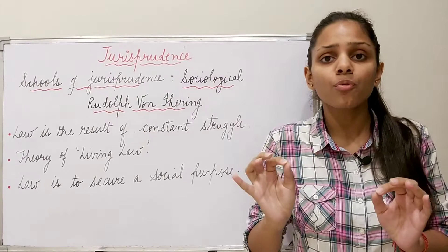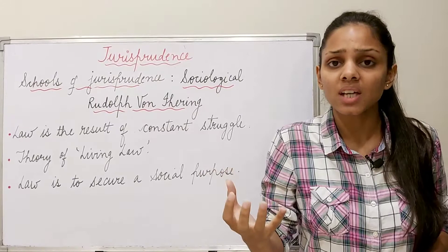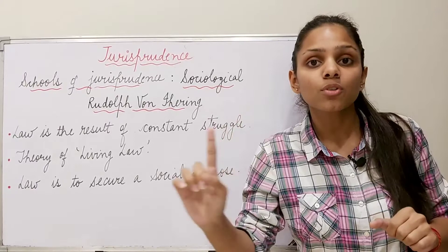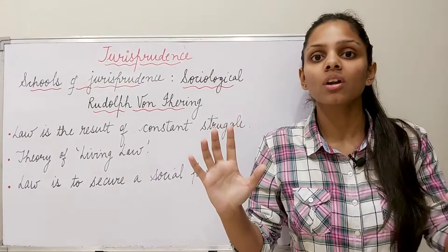He also said that interest constitutes a claim, a want, or a demand. Interest is either in the form of a claim, or the wants of an individual or a group of human beings, or their demands. It may belong to an individual or to society at large. The claim or want or demand of an individual human being is his individual will, and that of society at large is the general will.